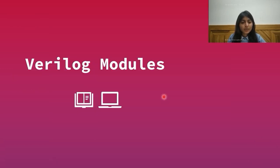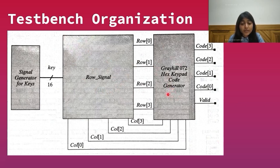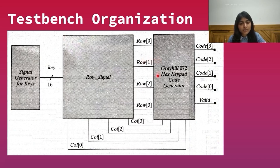Let us understand how the Verilog modules have been divided. Since we are working in a Verilog environment and not on a physical board, we cannot get the inputs manually. Therefore, the signal generator for keys will simulate the key press for us. There is the row signal module which will highlight the row line corresponding to a pressed key, and the hex keypad code generator which generates the encoded outputs. Between the row signal module and the hex keypad code generator, there is the synchronizer module, whose function is to convert the asynchronous row inputs to synchronous inputs.